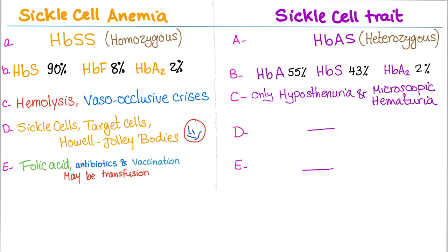In sickle cell anemia, folic acid, antibiotics, and vaccinations are needed, and maybe even transfusion or exchange transfusion in severe cases. In sickle cell trait, do nothing, because sickle cell trait is completely benign. That's it for the comparison. If you know any more differences between sickle cell anemia and sickle cell trait, please let me know in the comment section below. Thank you very much for watching and see you next.